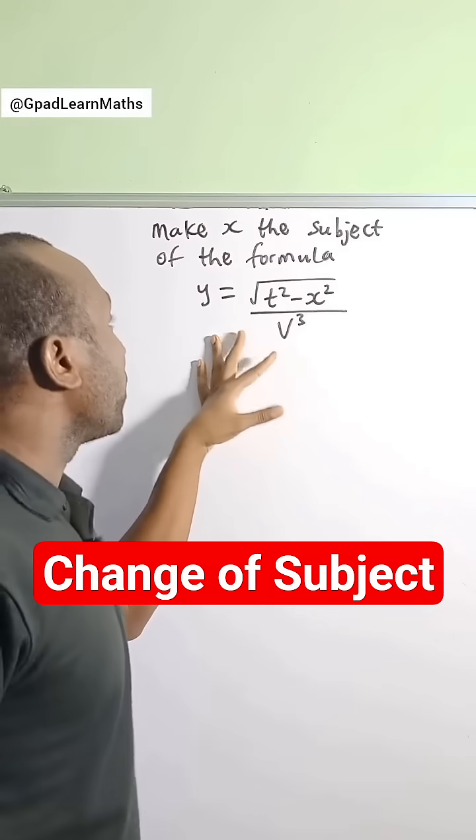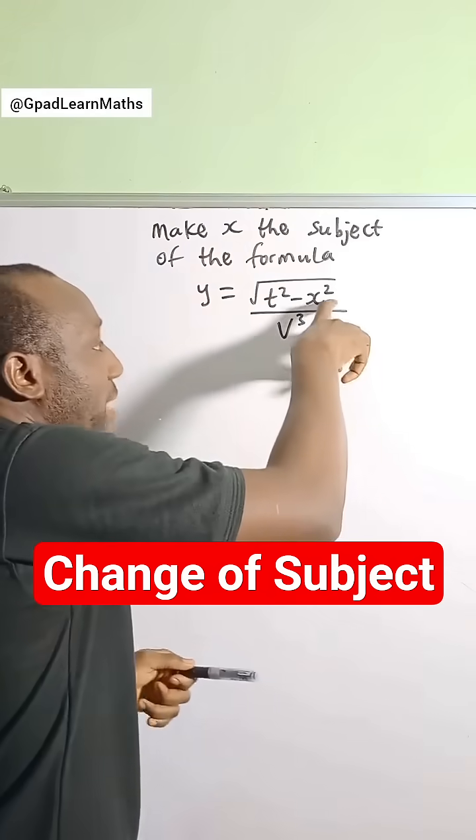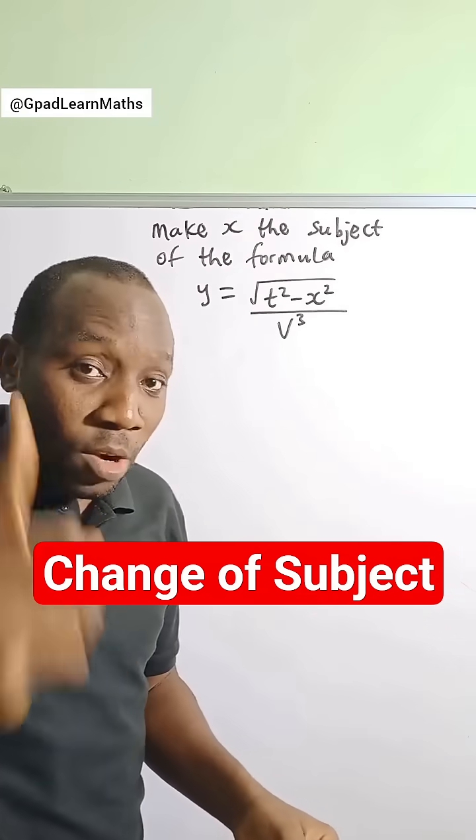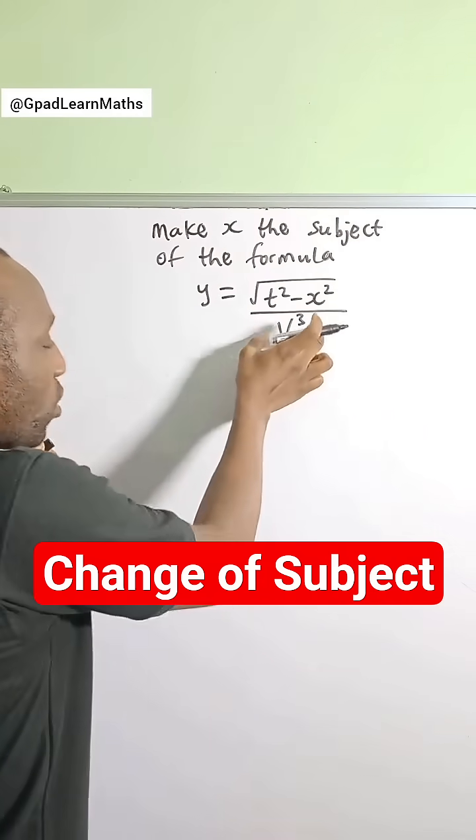Let's make x the subject of the formula in this equation. Look at where x is hiding - we need to bring it out and make it stand alone. So we need to remove this v cubed first of all.